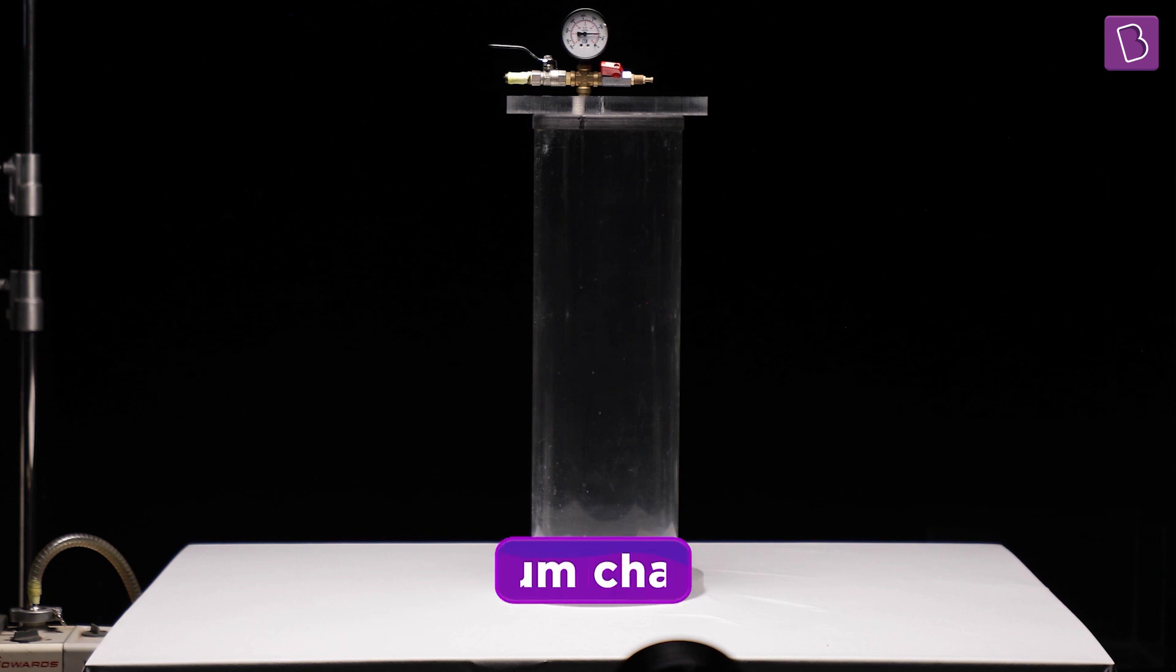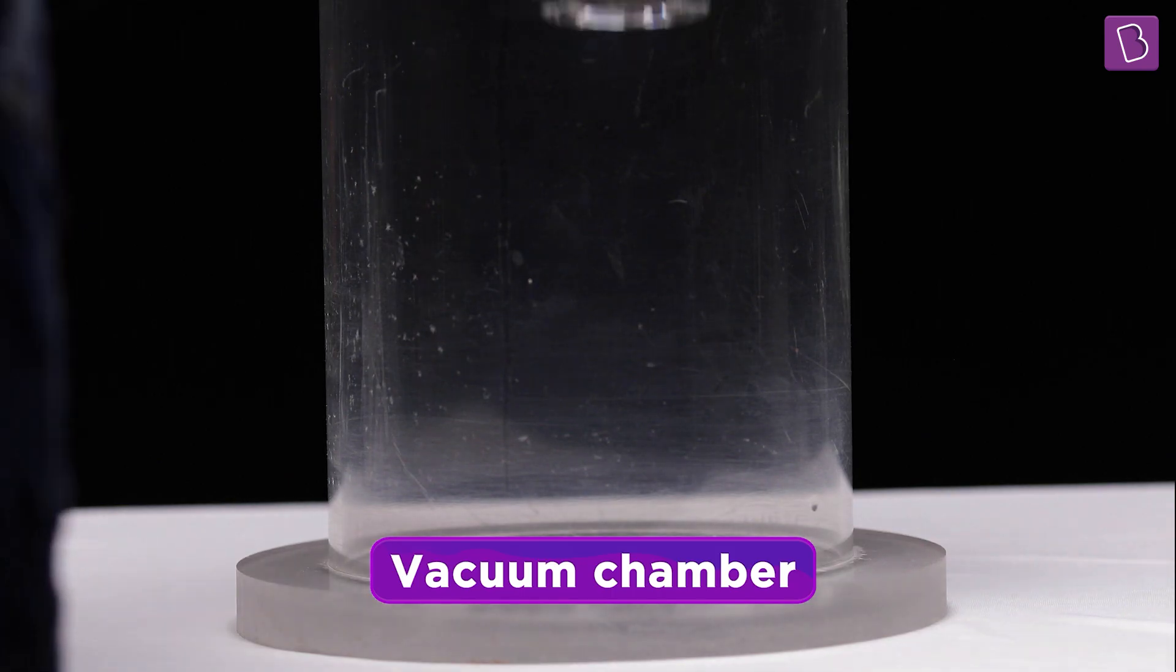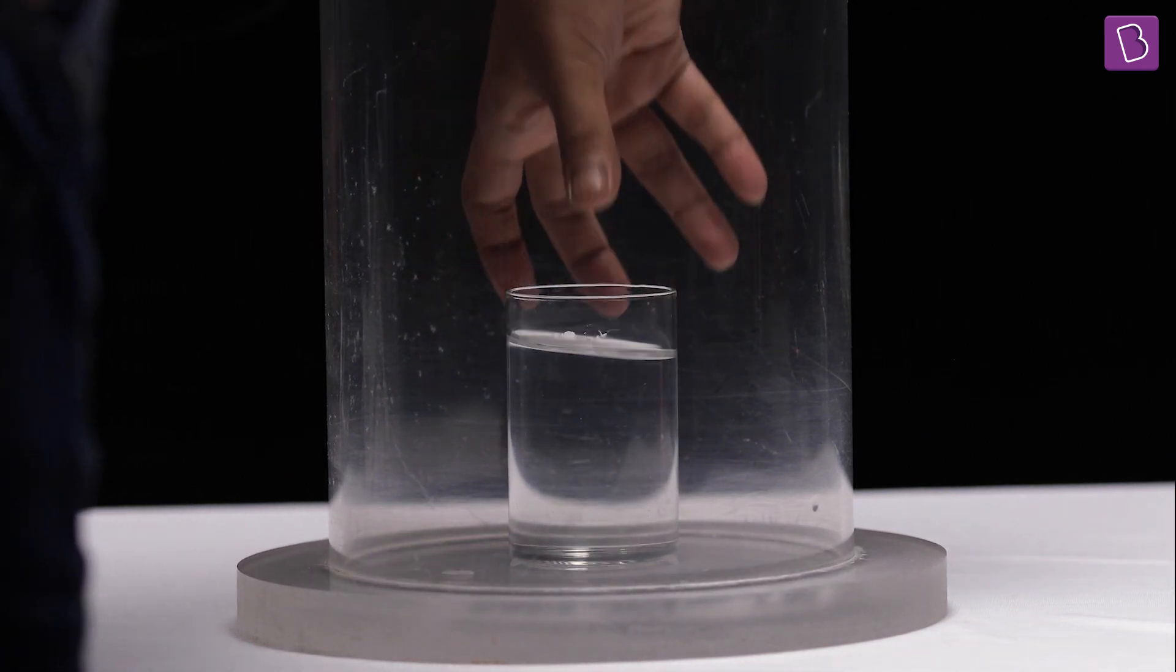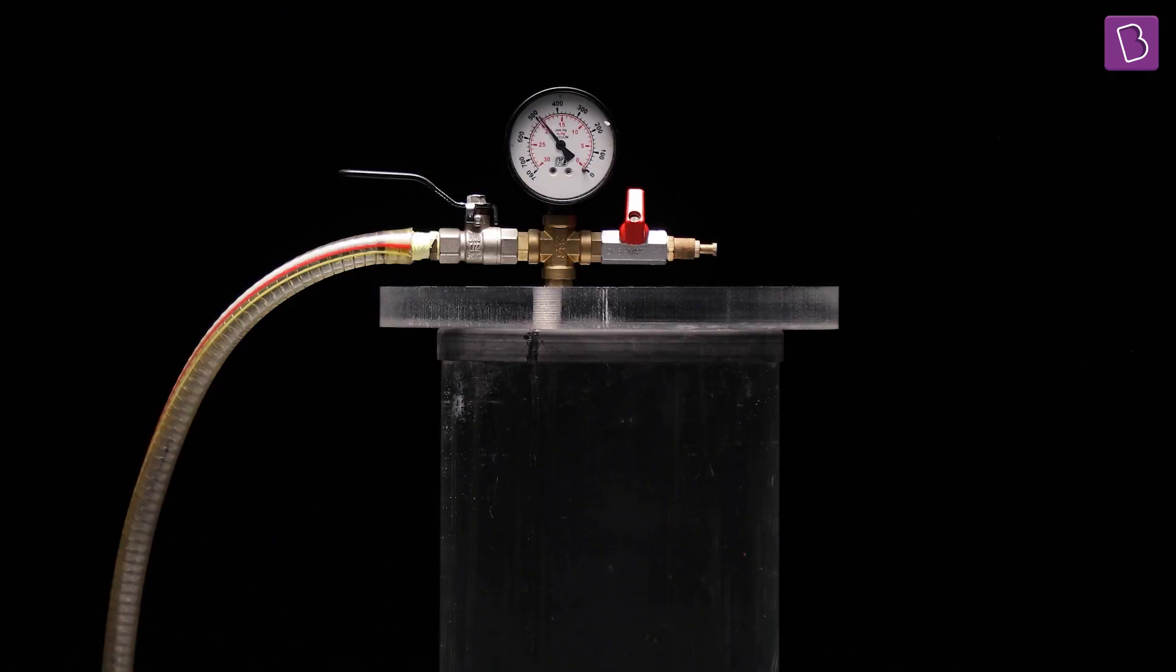Let me borrow a vacuum chamber with a glass of water placed inside of it. Now, by pumping out air out of the sealed chamber, we reduce the pressure of air around the water. Notice that there is no source of heating out here.